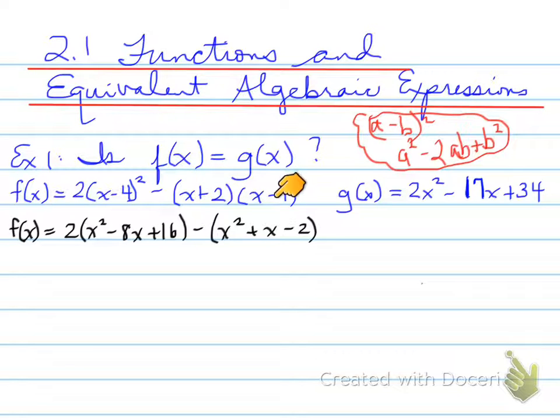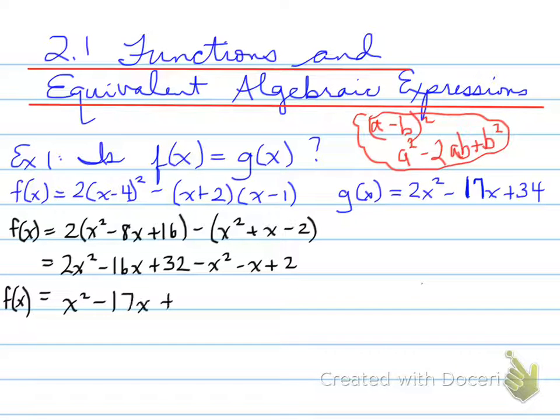The second part got expanded out as well. And if you do an OI, the OI being the outside and the inside part of FOIL, the outside, outer, and inner parts of FOIL, the OI (x+2)(x-1) will give us +x. So when you expand this out, you will end up having 2x² - 16x + 32 - x² - x + 2. And now you can collect like terms because there are no brackets left and it turns out to be x² - 17x + 34.